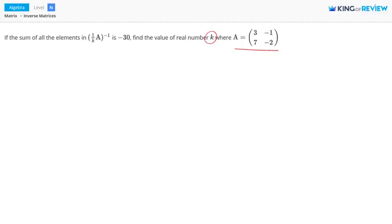So we have 1 over k times A, and we're taking the inverse of this. This is equal to 1 over k to the power of negative 1 times A to the power of negative 1. So 1 over k to the power of negative 1 equals k, and then we have times A inverse.